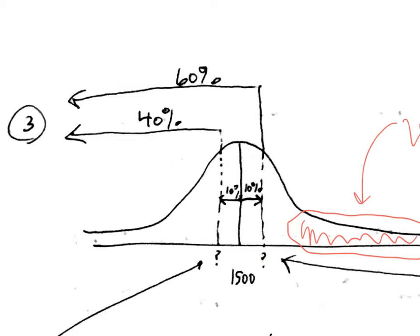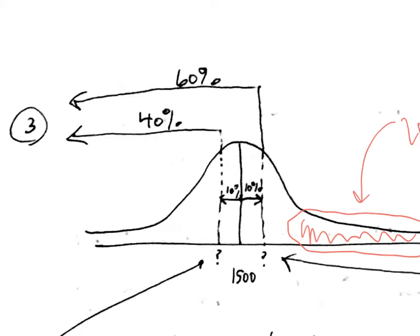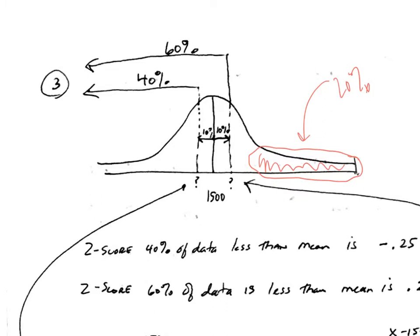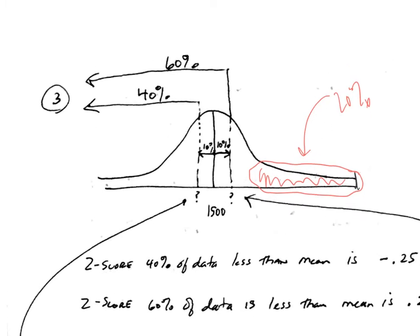So if I know that 10 percent of the students are in this range right here, I also know that for this SAT score, 40 percent of all the students scored less than this SAT score. And on the other side, 60 percent scored less than this SAT score. So now we've got two things to figure out.